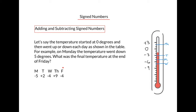And finally, on Friday, the temperature went down 4 degrees. So we start at plus 2, go down 4 places, and we'll end up at negative 2 degrees at the end of Friday. In other words, the result of adding and subtracting these sign numbers is negative 2, or we could say the result of simplifying this expression is negative 2.